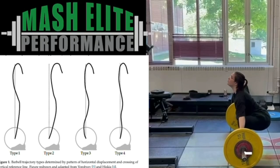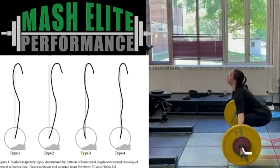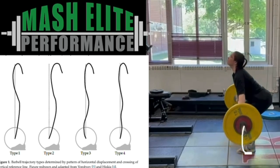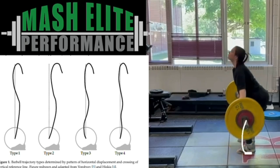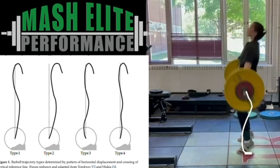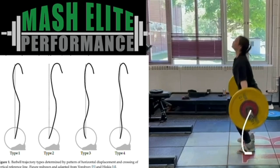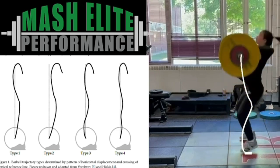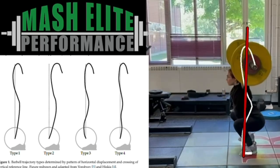Now let's look at some examples. Here's Hannah and a bar path she used to have. As you can see, she mimics either a Type 3 or Type 4 — not a lot of horizontal rearward movement at the beginning. With her short lower legs, she should be able to achieve that rearward movement. What this causes is a major horizontal displacement forward, putting her well in front of that original vertical reference line.